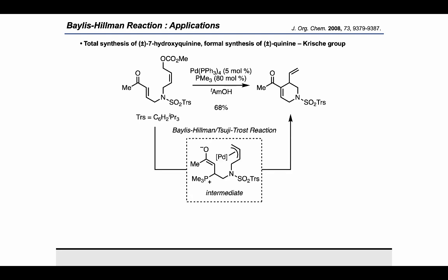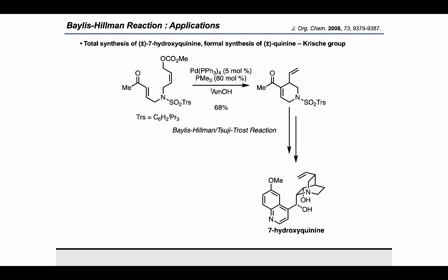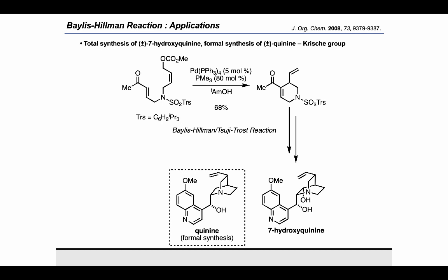This was possible by simultaneously activating the enone using trimethylphosphine for Baylis-Hillman-type activation, while the allyl carbonate could be activated as the palladium π-allyl electrophile. Cyclization of the enolate onto the π-allyl electrophile resulted in the product, which could be carried on to complete the total synthesis of 7-hydroxyquinine, as well as the formal synthesis of quinine.